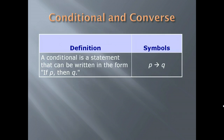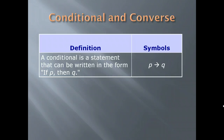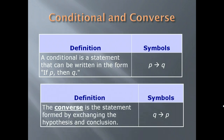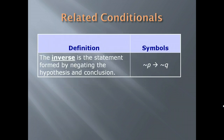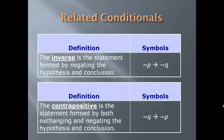A conditional statement is written as 'if P, then Q.' The converse is formed by switching P and Q: 'if Q, then P.' The inverse is formed by negating both the hypothesis and conclusion: 'not P implies not Q.' The contrapositive is formed by both negating and exchanging the hypothesis and conclusion: 'not Q implies not P.'